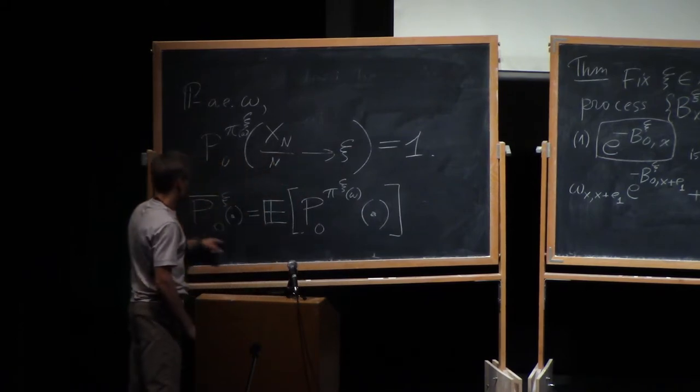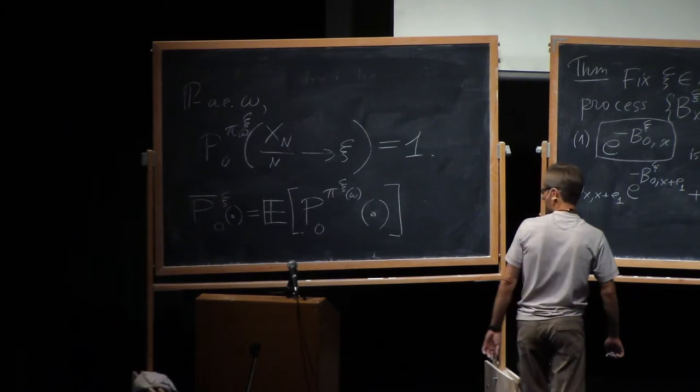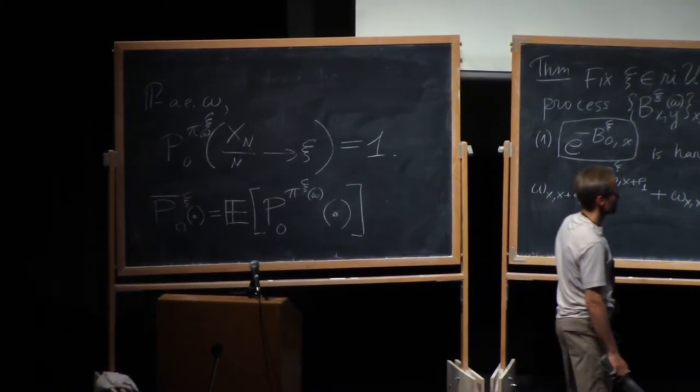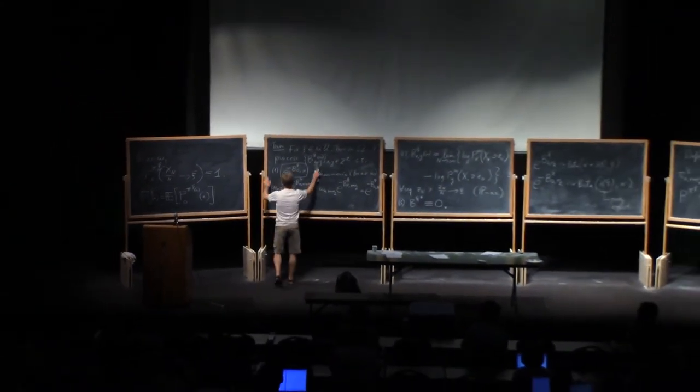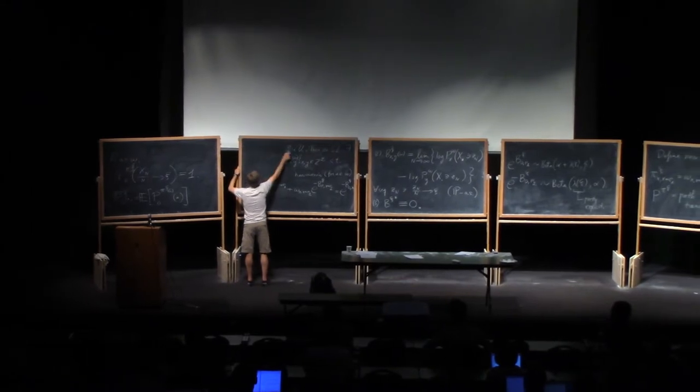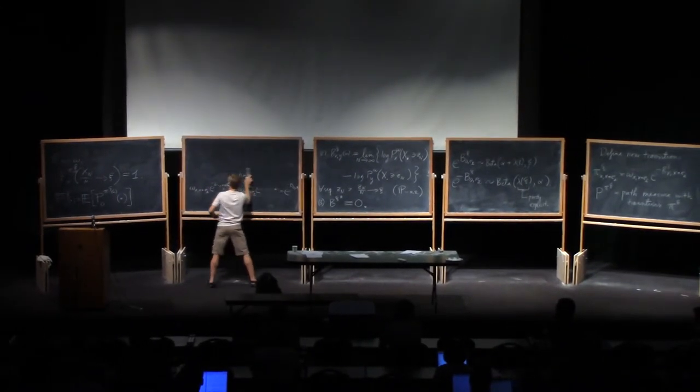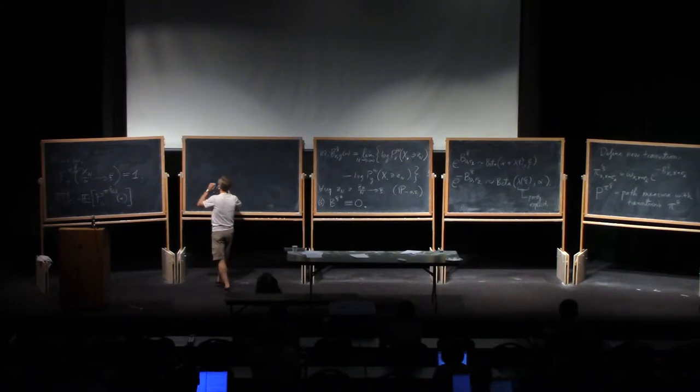Under this path measure, we see the two-thirds exponent. So let me state a theorem to that effect. Let's see what's good to erase. Maybe I'll keep that so far. This is just general blah, blah, blah here. Sol-theorem.